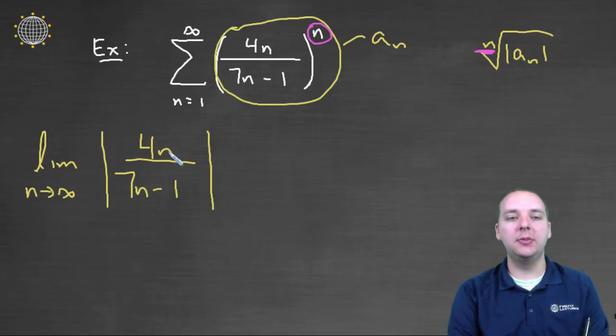Alright, now we just need to see where do these terms go as n goes to infinity. Well this would give you infinity over infinity, so we'd use L'Hopital's rule. We can drop the absolute values because the absolute values aren't needed here, and I think after one use of L'Hopital's rule it's fairly clear that this would be 4 sevenths.